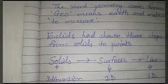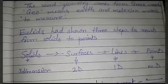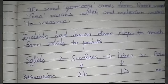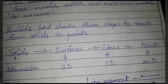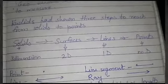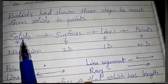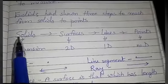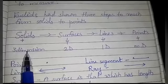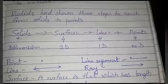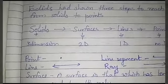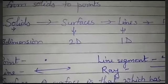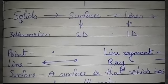Euclid showed three steps to go from solid to point. Step one: solid. Step two: surfaces. Step three: lines to points. Solids have three dimensions, surfaces have two dimensions, lines have one dimension, and a point has no dimension.